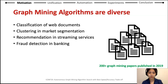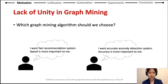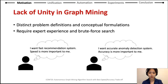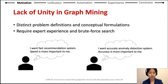A large array of new graph mining algorithms is introduced every year to solve these real-world problems. With these many graph mining algorithms, practitioners raise the question: which algorithm should we choose for our application? For example, user A says 'I want a fast recommendation system — speed is more important to me than accuracy,' while user B says 'I want an accurate anomaly detection system — accuracy is my top priority.' However, graph mining algorithms often have distinct problem definitions and different conceptual formulations. This lack of unity makes it hard for practitioners to determine which algorithm is suitable among dozens of candidates, making algorithm selection a resource-intensive process requiring expert experience and brute-force search.